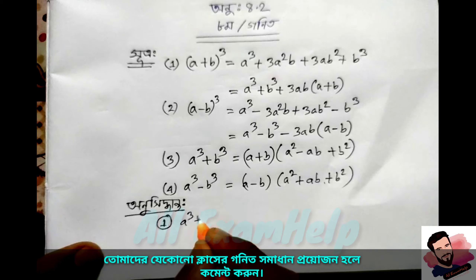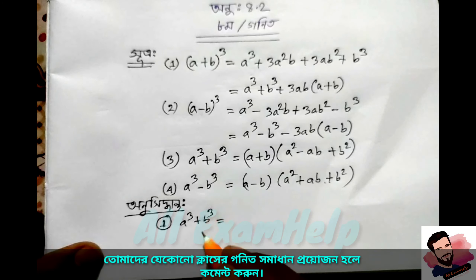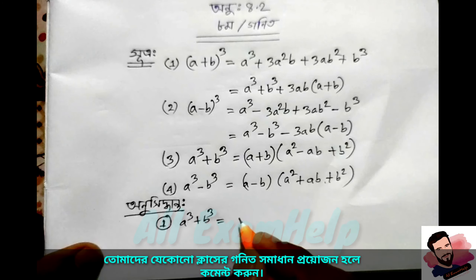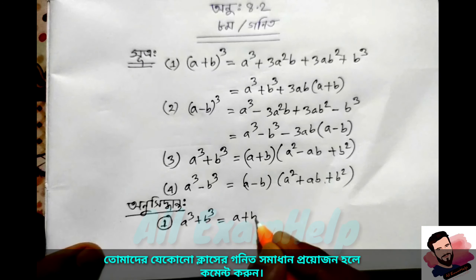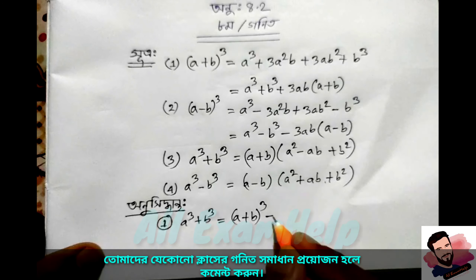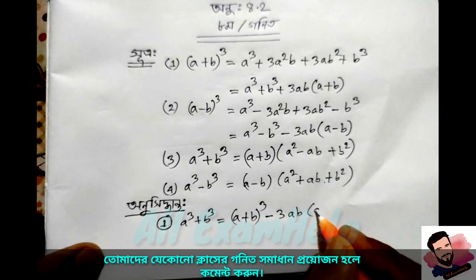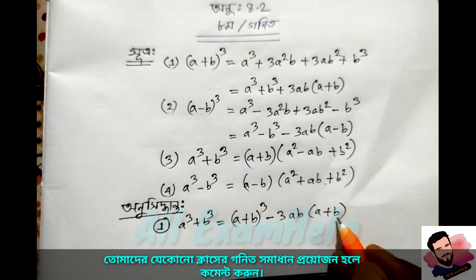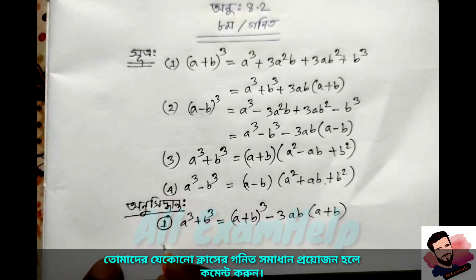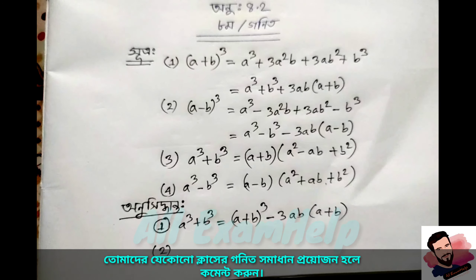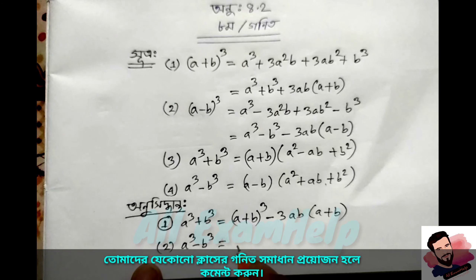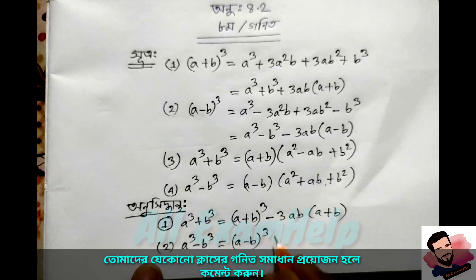a plus b, the whole cube — here we write it out step by step, expanding the expression using the identity.